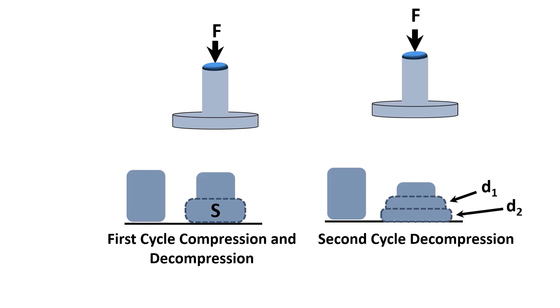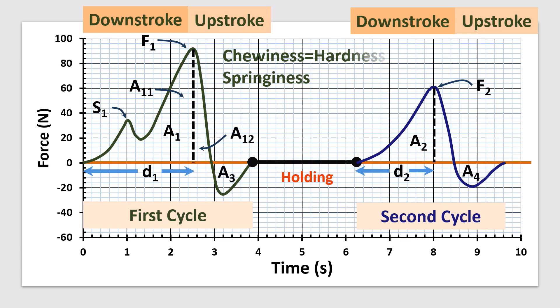Chewiness equals hardness times cohesiveness times springiness. Chewiness is the energy for masticating a food until it is ready for swallowing. It is mainly for solid foods. Gumminess equals hardness times cohesiveness. Gumminess is a measure of the force to disintegrate the particles ready for swallowing. It is only applied for semi-solid foods.